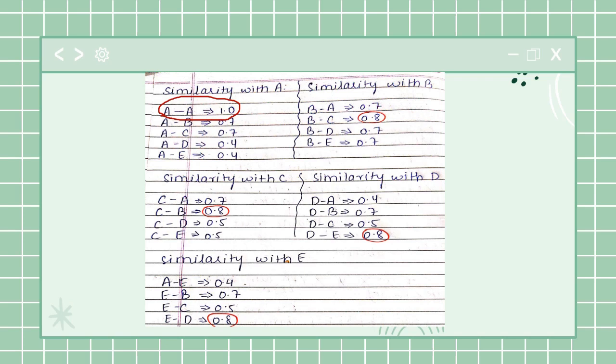The next line I have given similarity between A and B - it is 0.7 or 70 percent. Similarity between A and C is again 70 percent. A and D is 40 percent. A and E is again 40 percent.